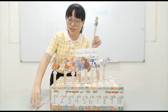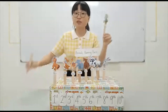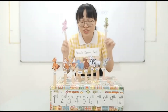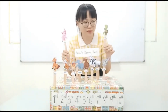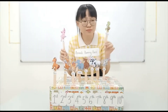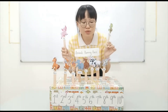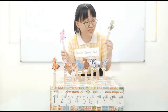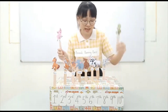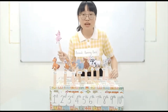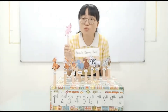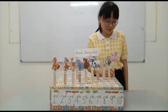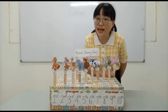Now the tortoise and the pig — they are running very, very slow in the race and they are very tired. Can you tell me which animal is at the 9th position? Very good! The tortoise is at the 9th position. And the pig is the slowest animal in the race, so the pig is at the 10th position.